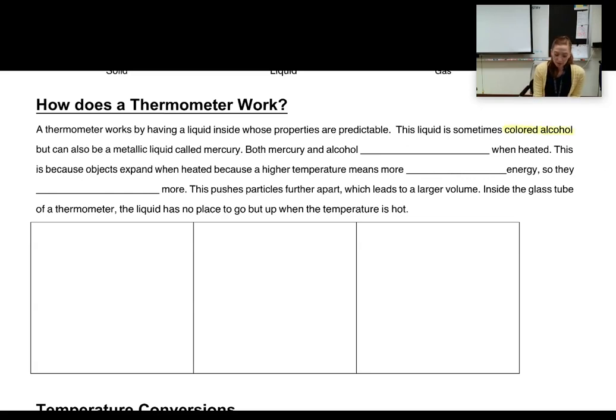Old school thermometers might have mercury in them, which is a liquid metal. Both mercury and alcohol expand when they're heated. And that's going to allow the liquid to travel up or travel down because it's going to contract if it cools down.